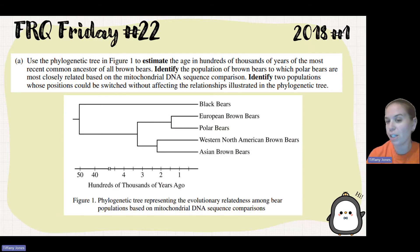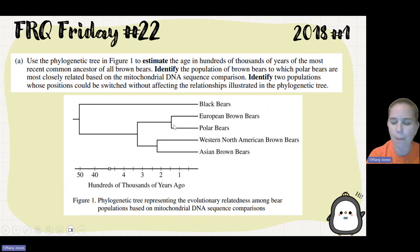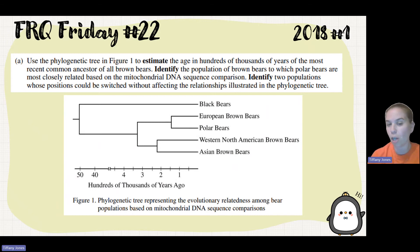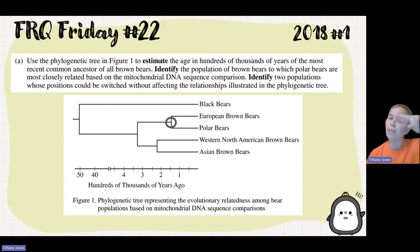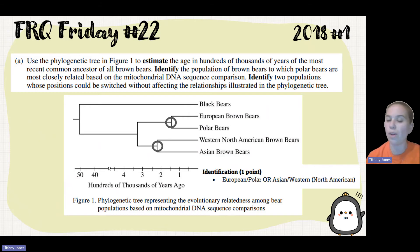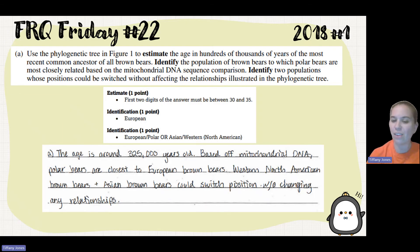The second part asks us to identify the population of brown bears to which polar bears are most closely related based on mitochondrial DNA sequence comparison. Looking at the tree, the polar bear and the European brown bears share a branch point, which tells us they are most closely related — so the answer is European. Next, we identify two populations whose positions could be switched without affecting the relationships in the phylogenetic tree. The polar bear and the European brown bear share a branch point and can rotate, as can the Western North American brown bear and the Asian brown bear. Either pair is an acceptable answer. Note that while the question says 'identify,' students should write complete sentences to ensure they receive credit.